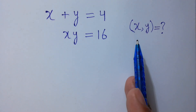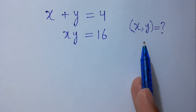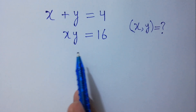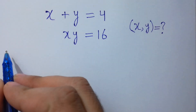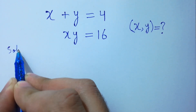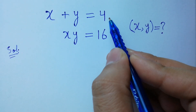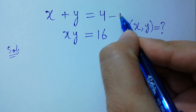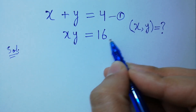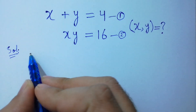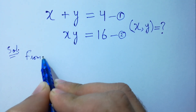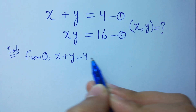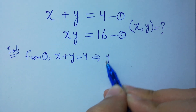Hello friends. Find the value of x and y if x plus y equal to 4 and x times y equal to 16. Let's have a solution. Let this be equation one: x plus y equal to 4. And equation two: x y equal to 16. From the first equation, x plus y equal to 4, then y equal to 4 minus x.